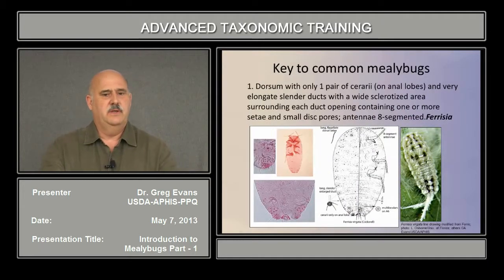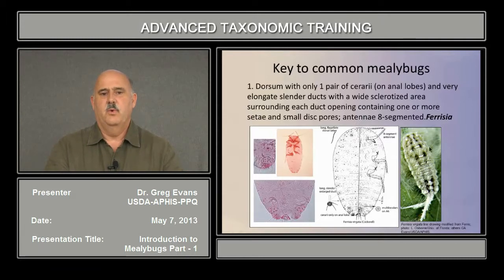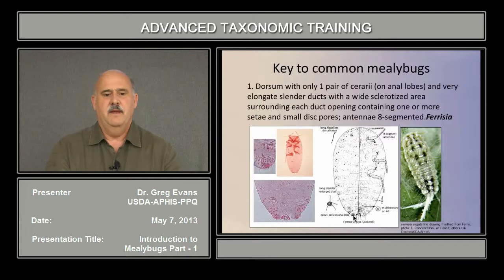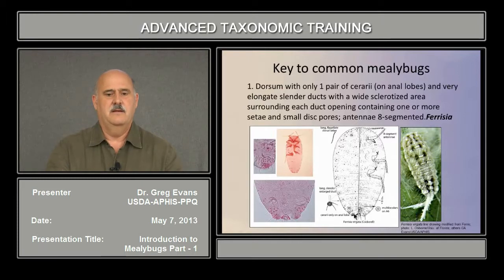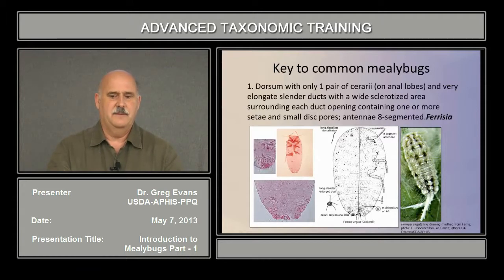Now we'll go through a short key of the common mealybugs to show some of the characters used. The first part of the key says: dorsum with only one pair of cerarii, down on the anal lobes at the posterior end. This genus also has very elongate enlarged ducts with a large sclerotized rim and setae coming out of the rim, along with tiny pores. This type of pore is unique to Ferrisia, and once you see that along with the only cerarii pair down there, you pretty much know you have a Ferrisia — the striped mealybug, named for the stripes on the dorsum.